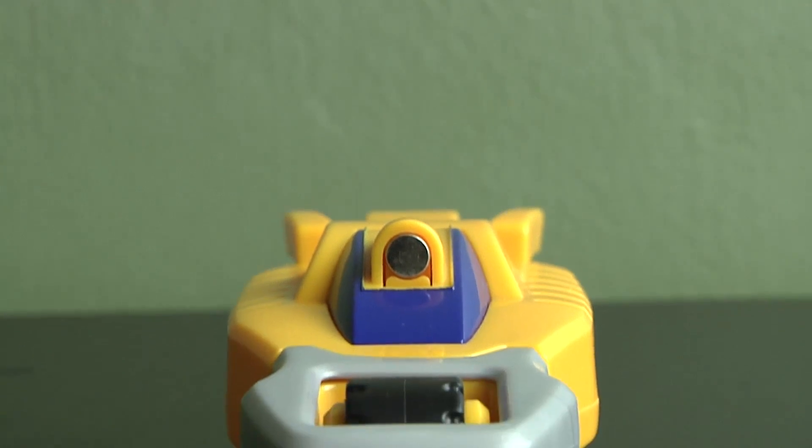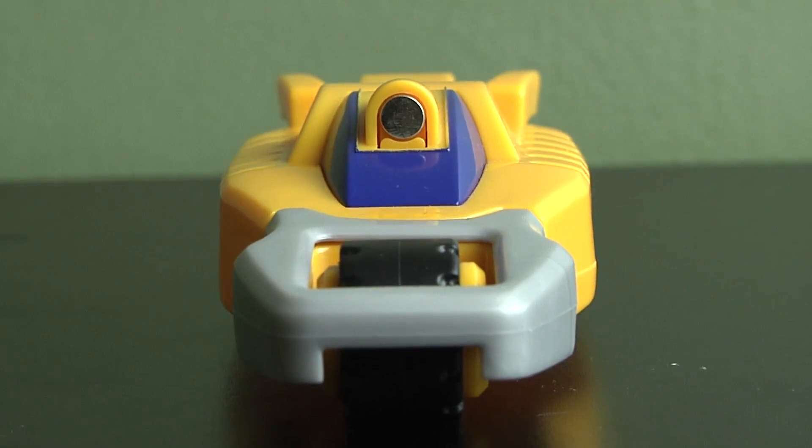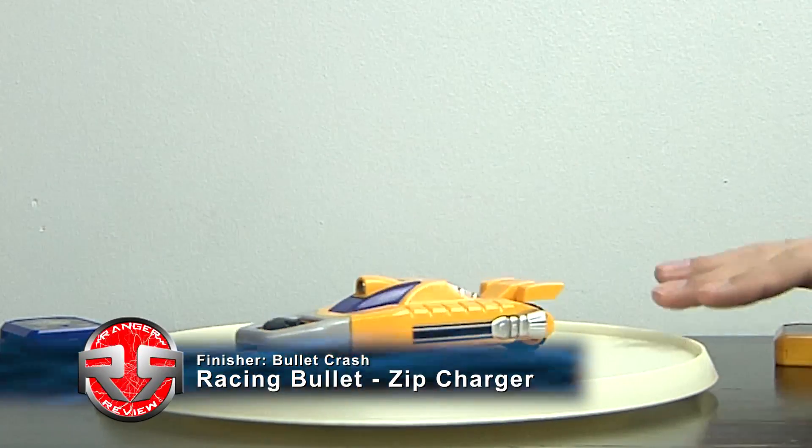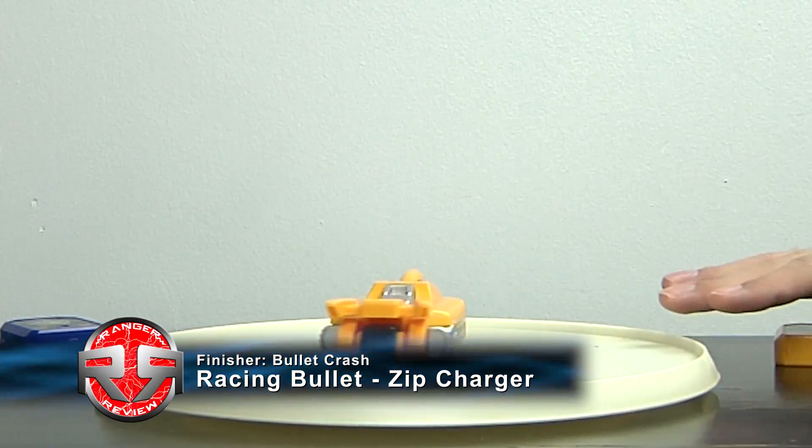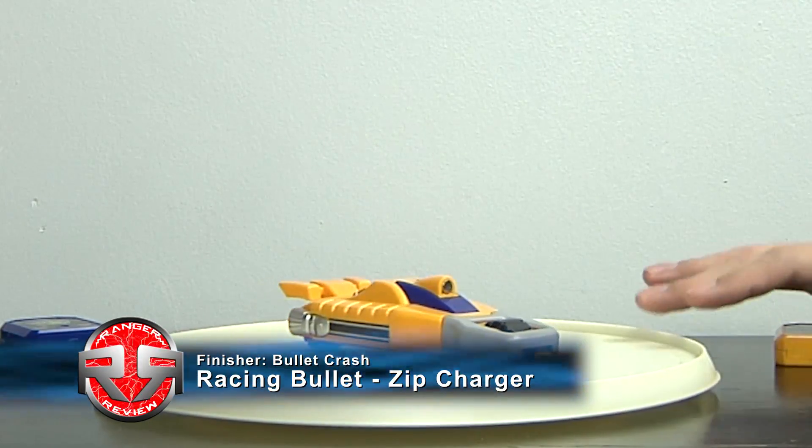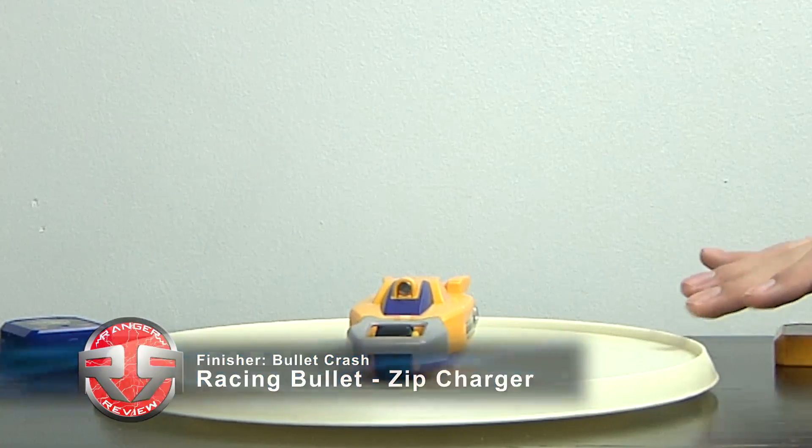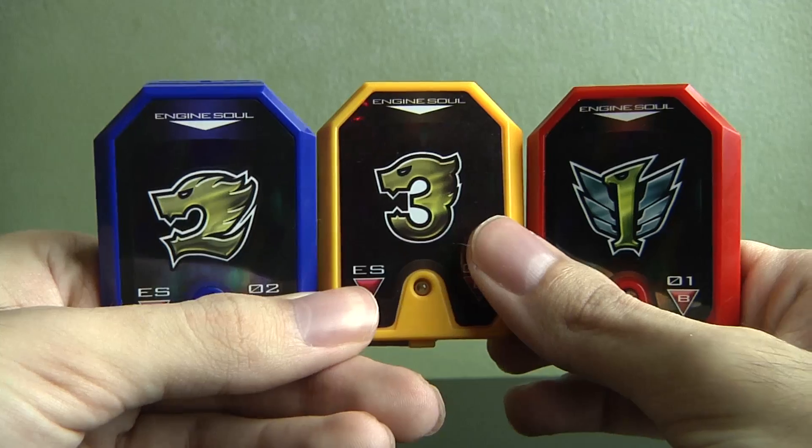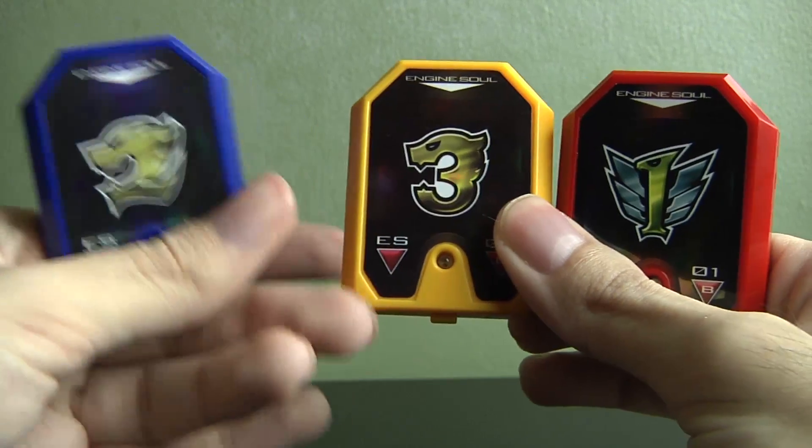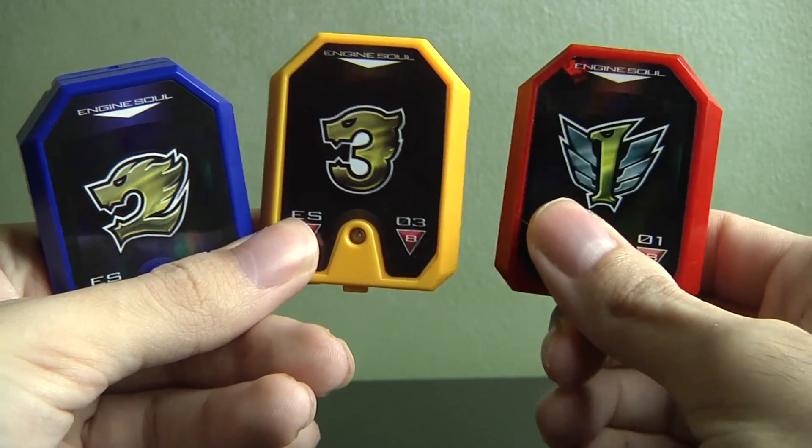So now we have Yellow's Zip Charger. This is just something I don't even know what to call it. It's supposed to look like an RC race car and it's supposed to be when it fires in the show, whatever engine souls they put inside the Zip Charger actually turns into Bassan Barovia Speedor in the show.